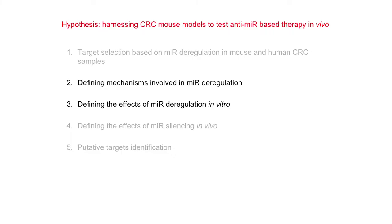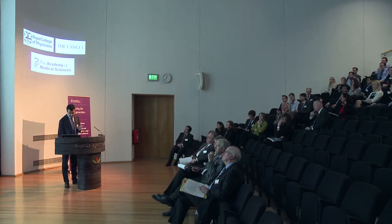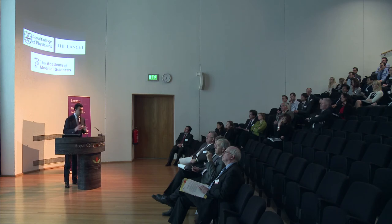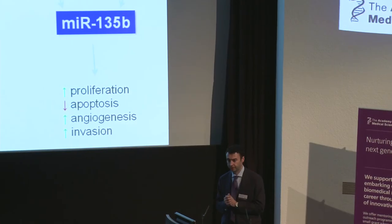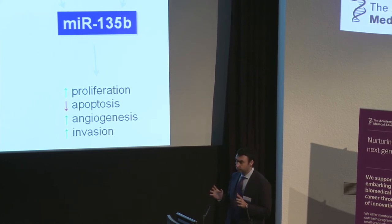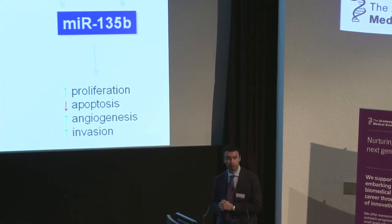MIR-135b is upregulated in cancer in mice and humans. Is that just a bystander event that might be useful as a biomarker, or is it also involved in promoting cancer progression? Using isogenic cell lines — mouse embryo fibroblasts engineered to harbor specific mutations in key oncogenes or tumor suppressor genes like APC, PI3K, or SRC — we were able to define at least three pathways, APC, SRC, and PI3K, that merge on the same microRNA. When we modulated the expression of the microRNA in vivo and ex vivo on spheres isolated from the bowel of mice harboring specific mutations, we observed increased proliferation, reduced apoptosis, and increased invasion.